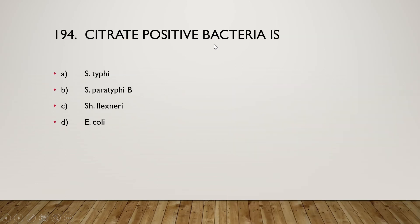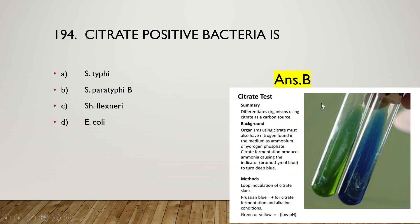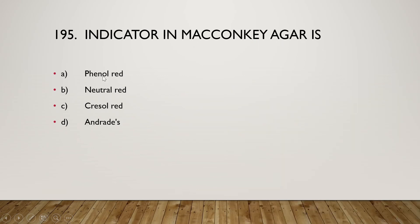Next question: citrate-positive bacteria is Salmonella typhi, Salmonella paratyphi B, Shigella flexneri, or Escherichia coli? The right answer is option B, Salmonella paratyphi B is a citrate-positive bacteria. The citrate utilization test is done in Simon's citrate agar where bromothymol blue is used as the indicator. If the microorganism uses citrate as a carbon source, they break down the citrate and ultimately show a blue color — a positive citrate utilization test.